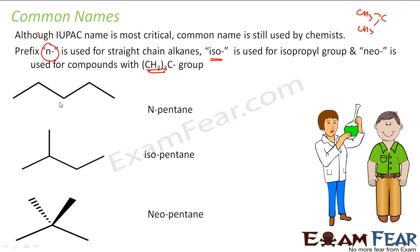This is n-pentane because it is the straight one — there is no branching. This is isopentane because it has two CH3 groups attached. This is neopentane because it has three CH3 groups attached.